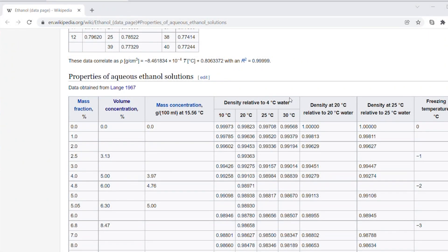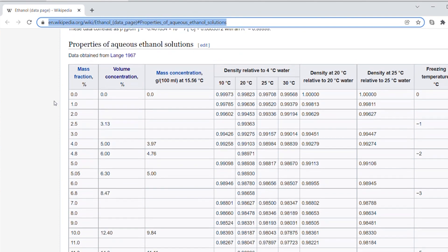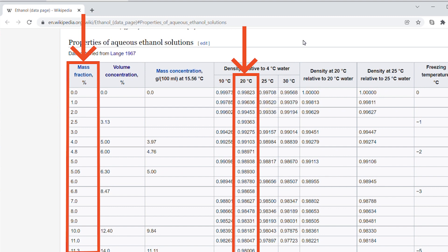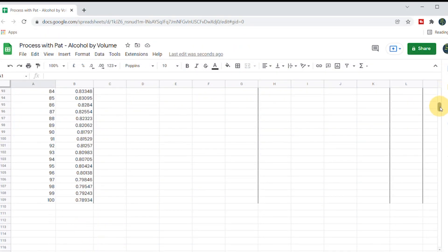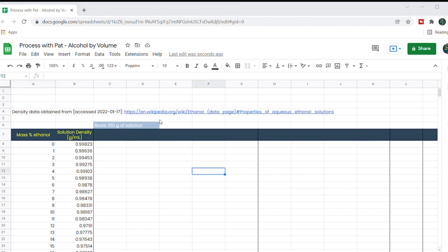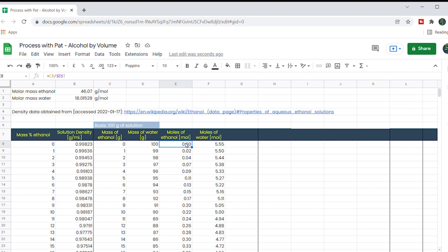We start by going to the ethanol data page on wiki. This gives me the density of water ethanol solutions as a function of mass percent ethanol. The density here is reported relative to 4 degree water, but that's close enough to one that I'm not bothered. I'm just going to use the data as is. We copy those across to our sheet. We pretend that we have 100 grams of solution. This is the basis of our calculation. That means the mass of ethanol is equal to the mass percentage ethanol from the wikipedia page, and the mass of water is simply 100 minus the mass of ethanol. We then convert these masses to moles, but to do that we need the molar mass of water and ethanol. The moles of each component equals the mass of the component divided by the molar mass of the component. We can then work out the mole fraction of ethanol by dividing the moles of ethanol by the sum of moles of both components.